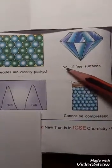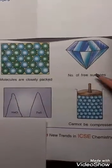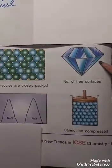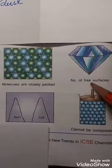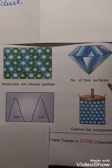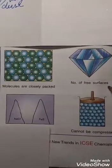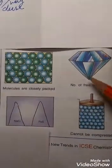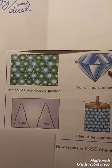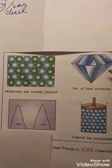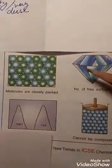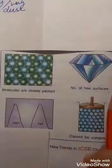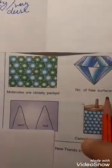Third: there are an infinite number of free surfaces in solids. Free surfaces are the exposed surfaces to the atmosphere. In solids, so many surfaces are exposed to the atmosphere. So solids can have an infinite number of free surfaces — an infinite number of exposed surfaces.